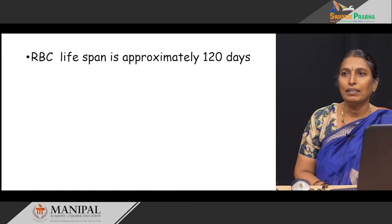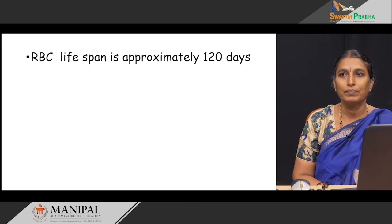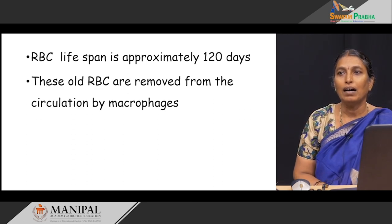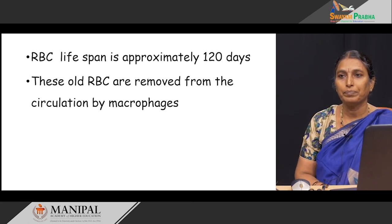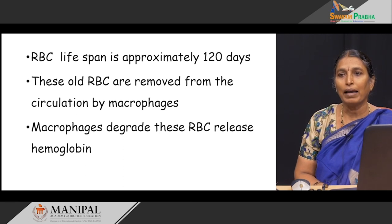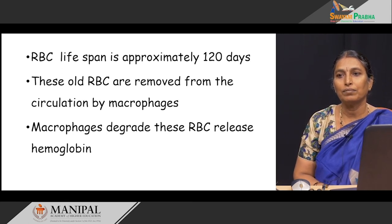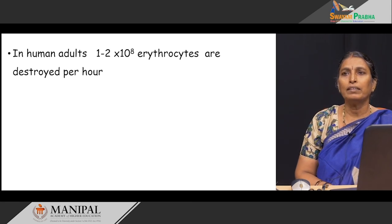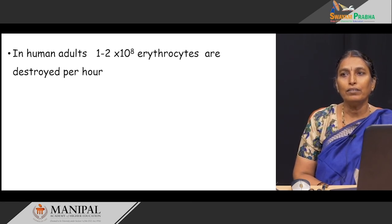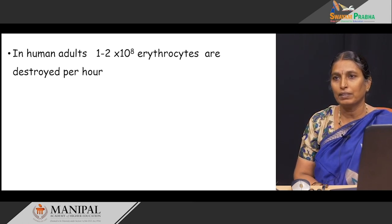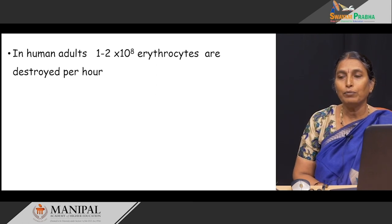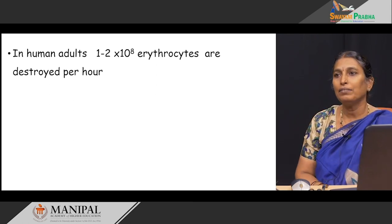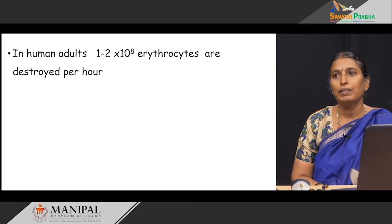In general, RBC lifespan is approximately 120 days. These old RBCs are removed from the circulation by macrophages present in the liver, spleen, and bone marrow. These macrophages degrade the RBC and release hemoglobin into the circulation. In human adults, 1 to 2 × 10⁸ erythrocytes are destroyed per hour. Of these, 85 percent are old RBCs and nearly 10 to 15 percent are defective newly formed erythrocytes.